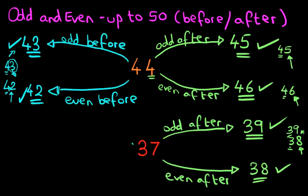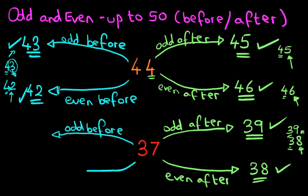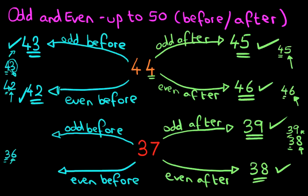Now we're also going to do the odd numbers before and the even numbers before. We've got the number 37. What number comes before 37? That's easy — it's 36. Is 36 an odd number or an even number? Ignore the 3, concentrate on the 6. Let's go through our even numbers: 0, 2, 4, 6. So 6 is an even number. Therefore 36 is an even number.